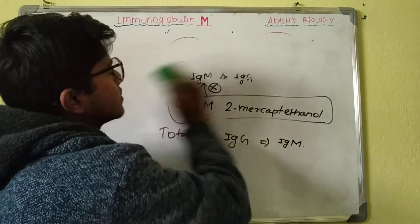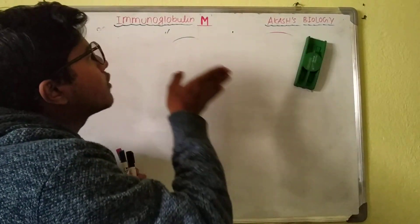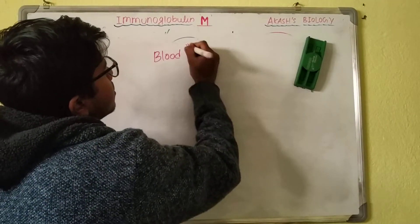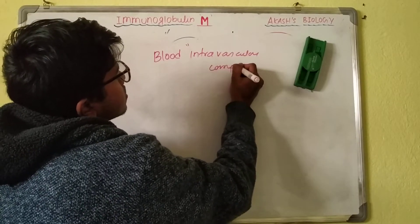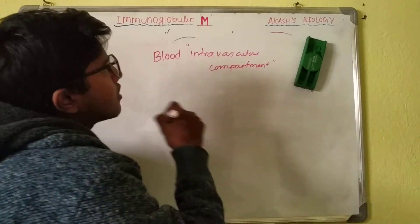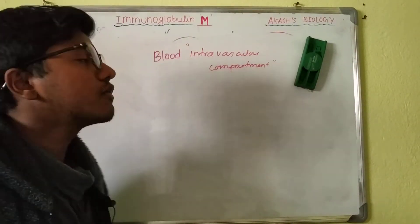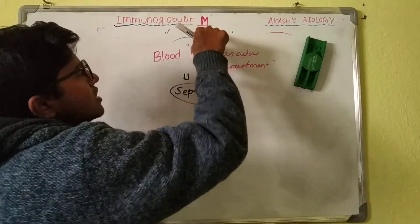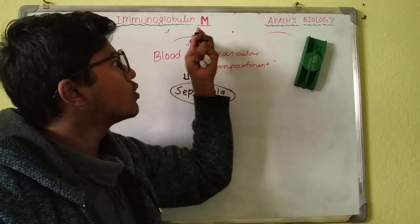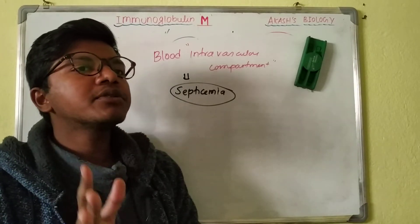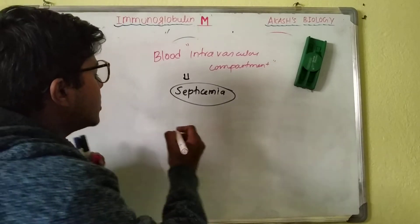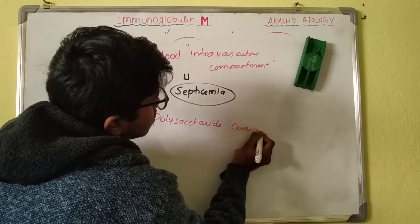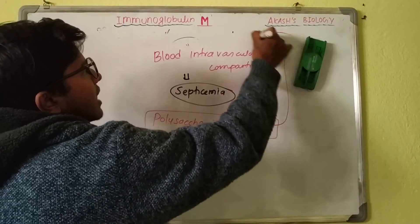The main site of action of IgM is the blood — the intravascular compartment. If IgM levels decrease in the blood, the patient suffers from septicemia. IgM acts mainly on viruses and bacteria with polysaccharide coverings; any bacterium with a polysaccharide coat is primarily attacked by IgM.